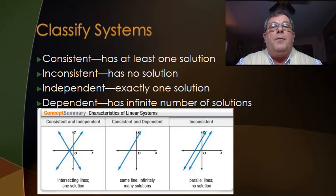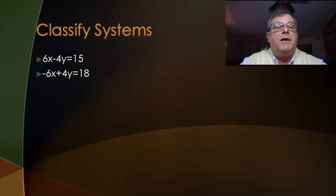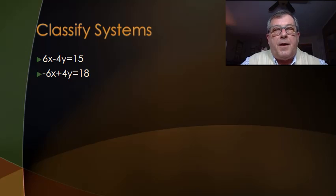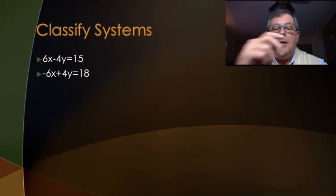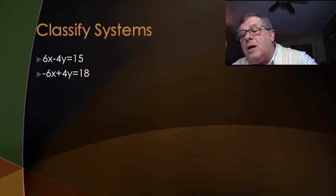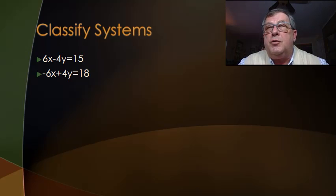Let's look at a couple of systems of equations and classify them as consistent independent, consistent dependent, or inconsistent. The first thing we need to do is take each equation and put it in slope-intercept form, reduced to its simplest form.